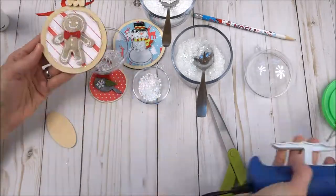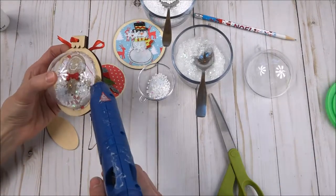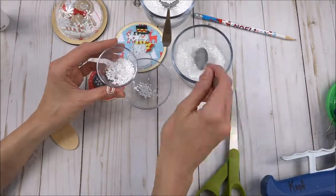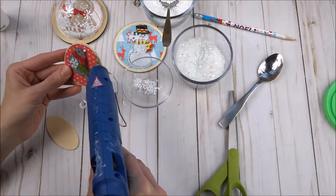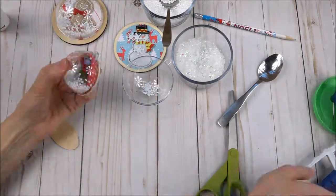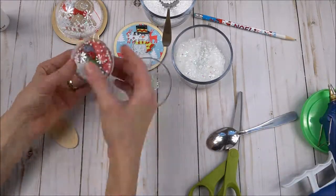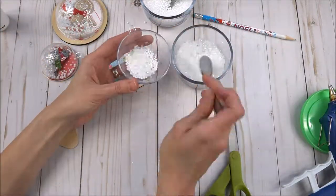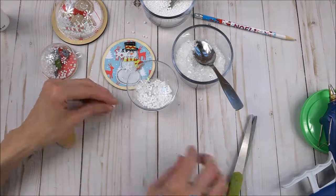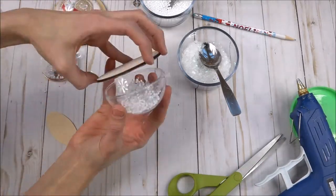You can attach your snow-filled domes to the wooden discs by adding hot glue to the back of the ornament. Then attaching your dome upside down. Once it's dry, hot glue the outside edge just to secure it in place. Then attach the snowflakes.